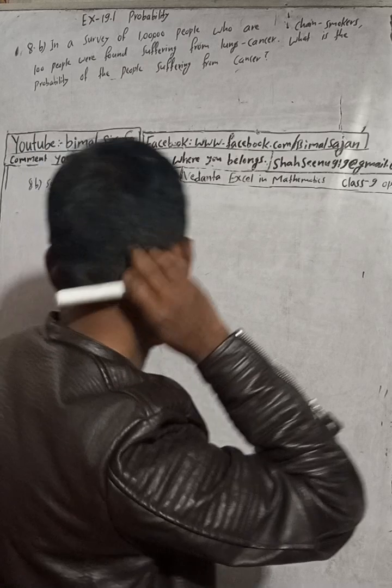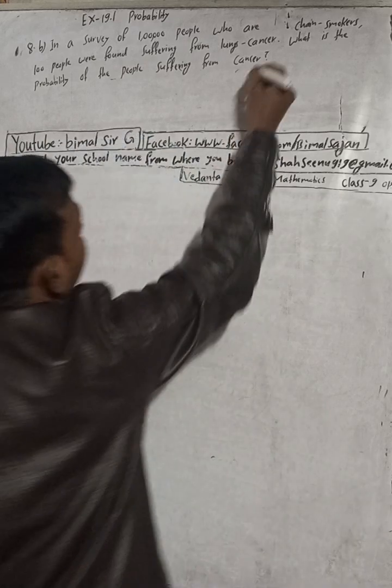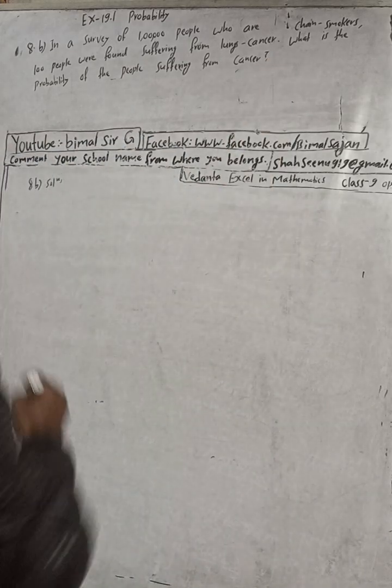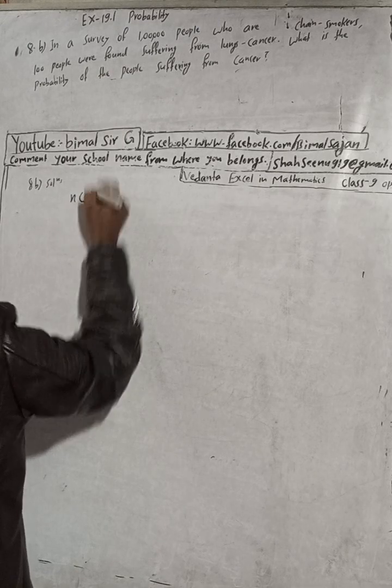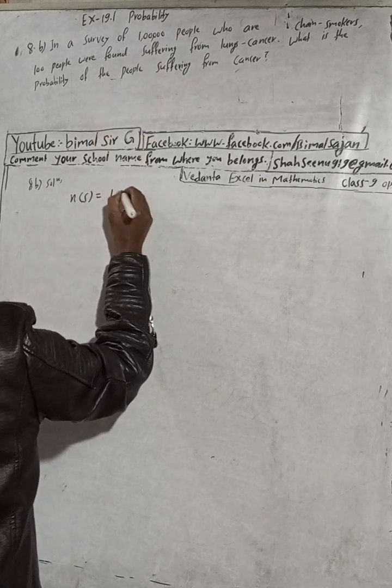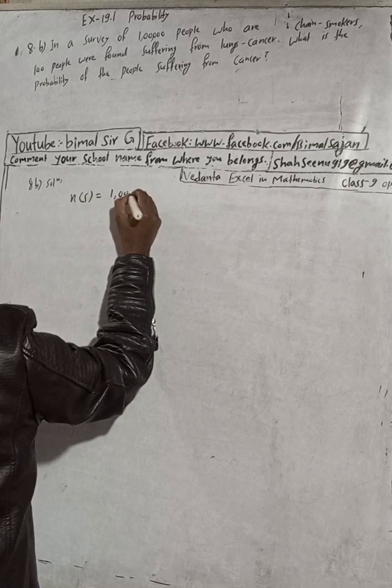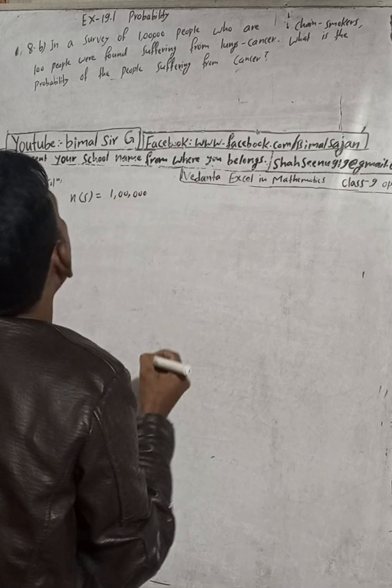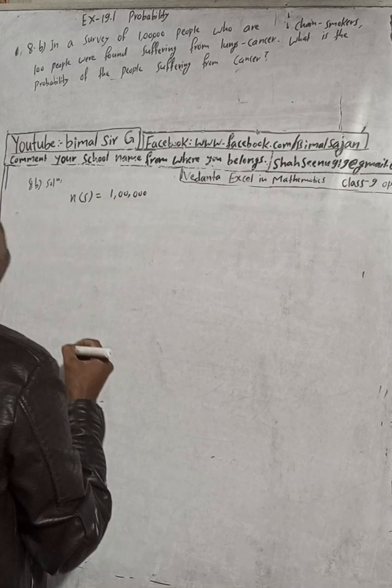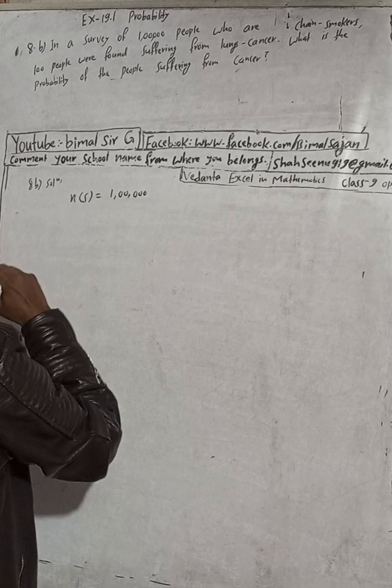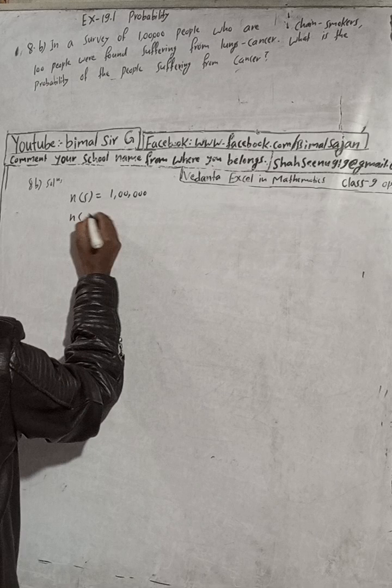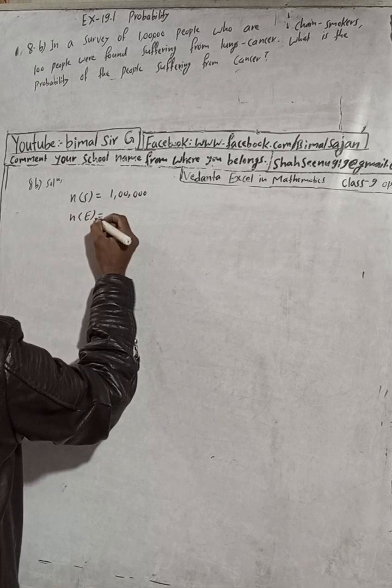Solution: In a survey, we can see here the sample space is obviously 1 lakh, who are chain smokers. 100 people were found suffering from lung cancer. What is the probability of people suffering from cancer? So our favorable cases is 100.